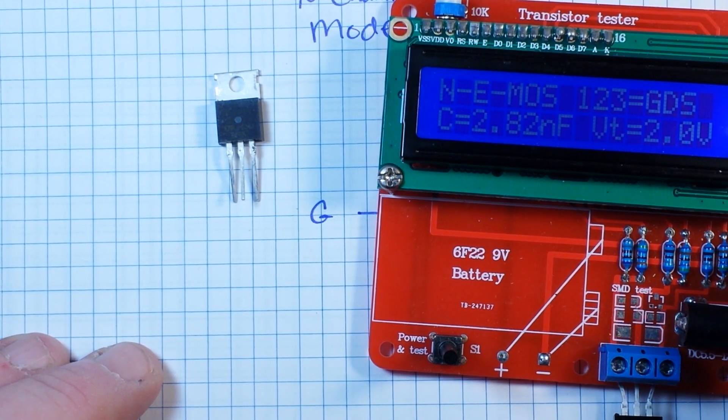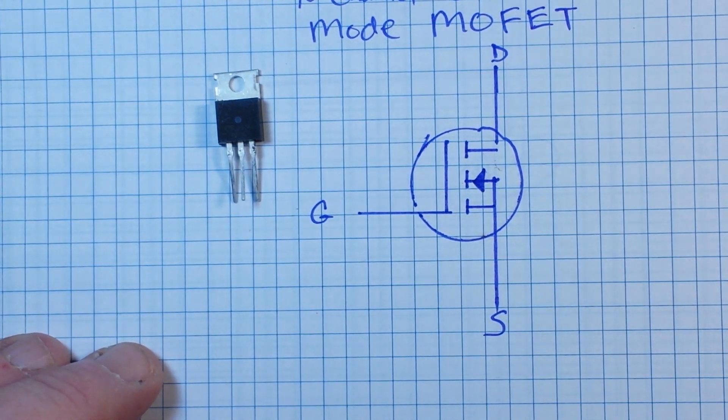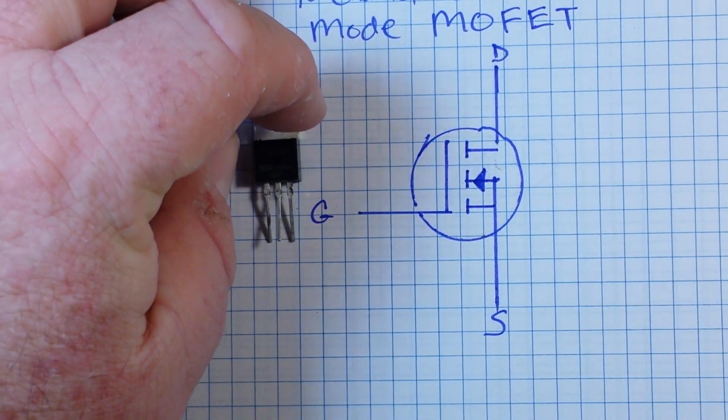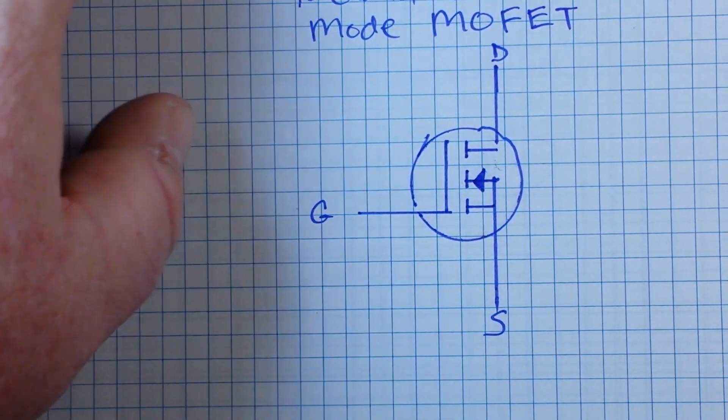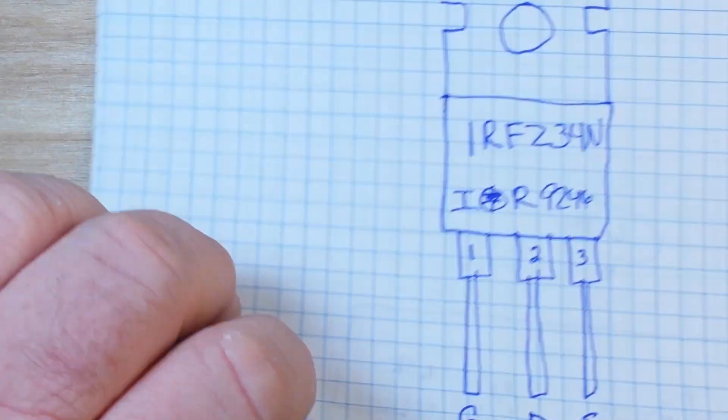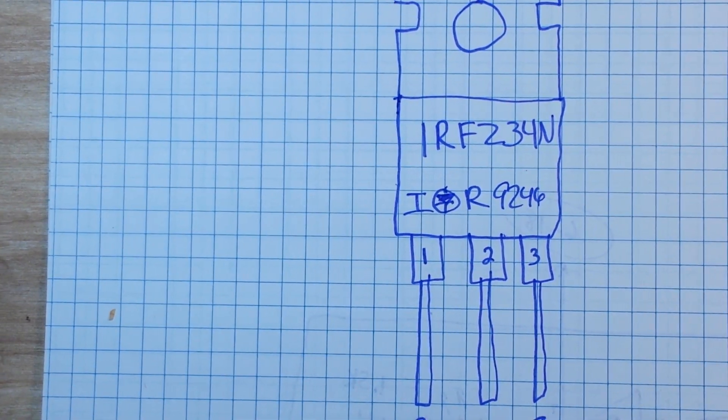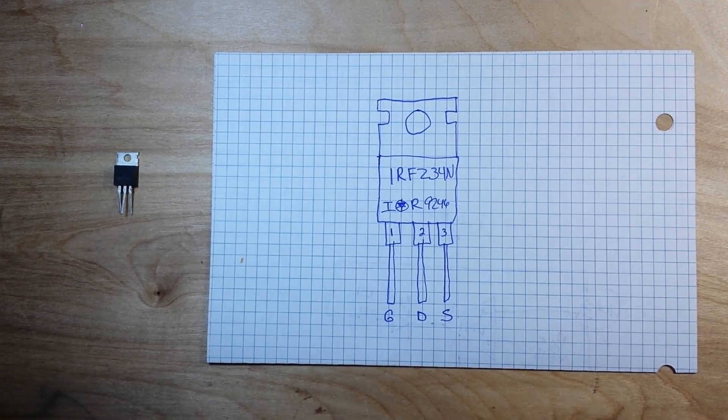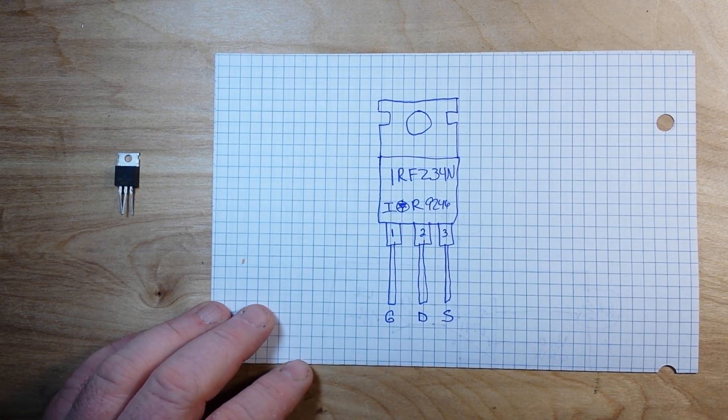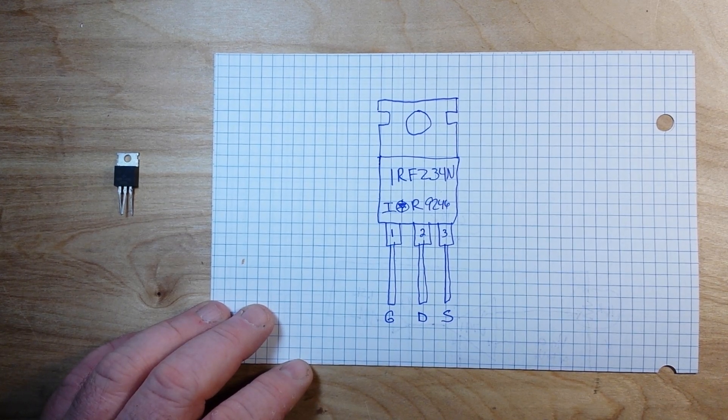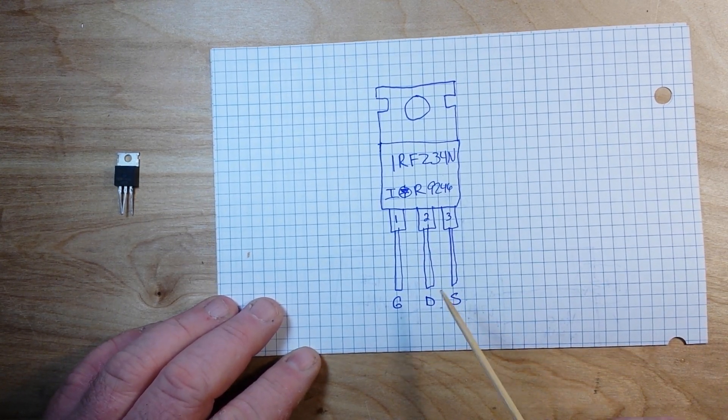Well, as long as you know what the pins are, you can do it. So here is my crude drawing of the IRF Z34N enhancement mode MOSFET, and the pins one, two, three are gate, drain, and source.